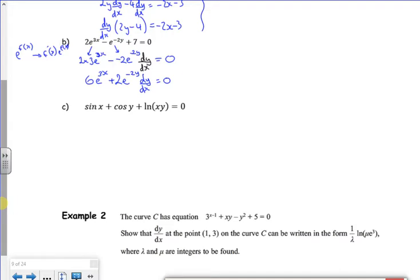If I take the 6e to the 3x over, I've got 2e to the 3x dy dx is equal to minus 6e to the 3x. If I divide through by the 2e to the 3x, I get dy by dx is minus 6e to the 3x over 2e. Messed up.